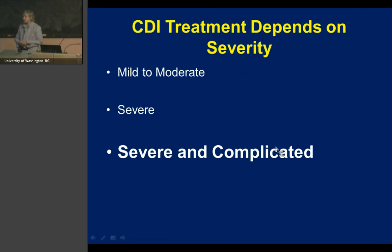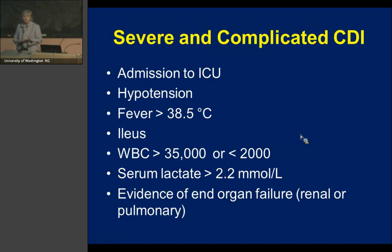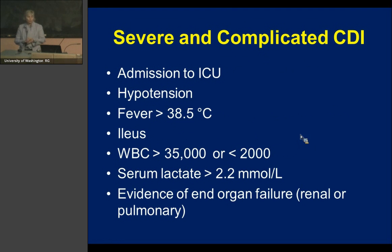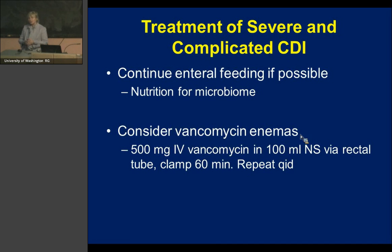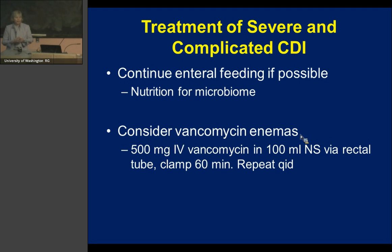Severe and complicated disease includes patients who require ICU care for their C. diff, hypotension, fever, ileus, a white count greater than 35,000 or less than 2,000, elevated lactate, or any evidence of end-organ failure — renal or pulmonary. In these sickest patients, start with a much higher dose of vancomycin at 2 grams per day, and also add IV metronidazole, which can cross into the colon. If there is no ileus, continue enteral feeding to support the microbiome. If there is ileus or toxic colon, give vancomycin enemas using the IV form in saline via a rectal tube four times a day.